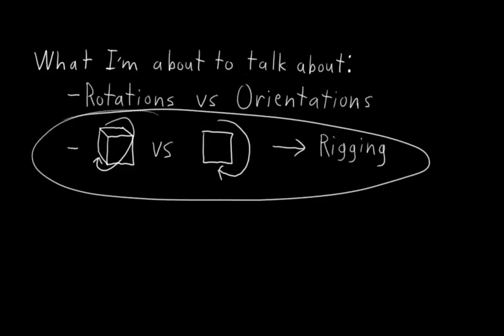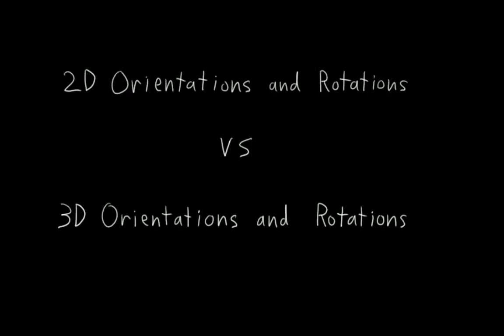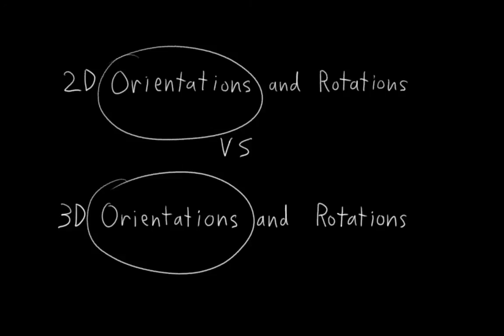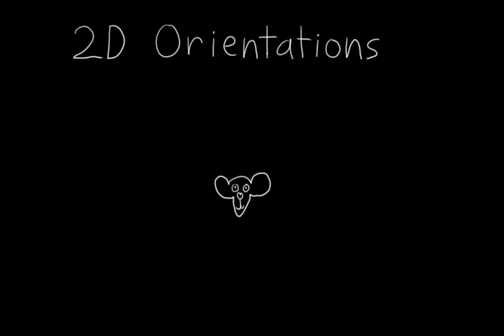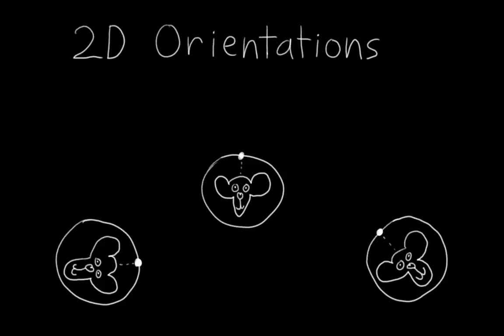The next topic is 2D orientations and rotations versus 3D orientations and rotations. Let's start with just orientations, since they're simpler, and they'll help to lay the groundwork for understanding rotations. So, 2D orientations. They're pretty simple. We can represent the 2D orientation of an object simply with a point on a circle. Wherever that point is, it represents a different orientation in 2D space.